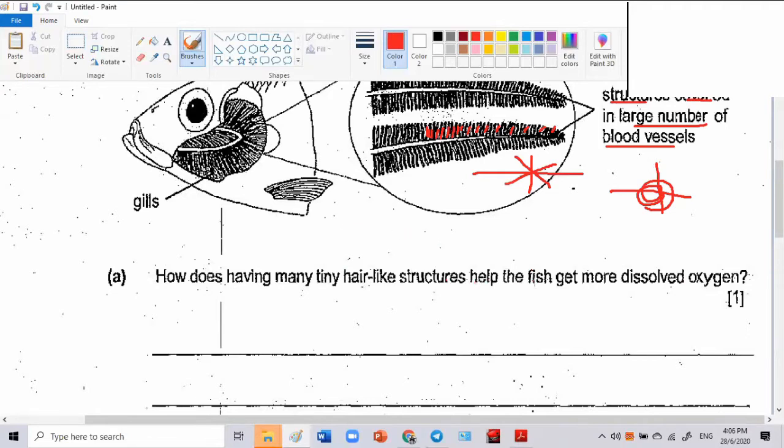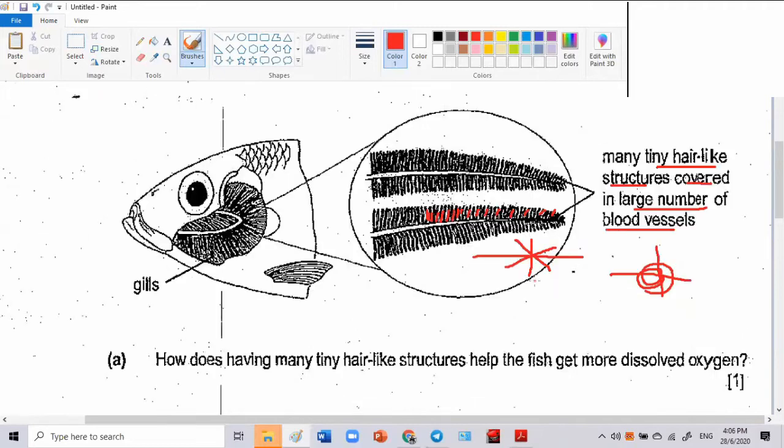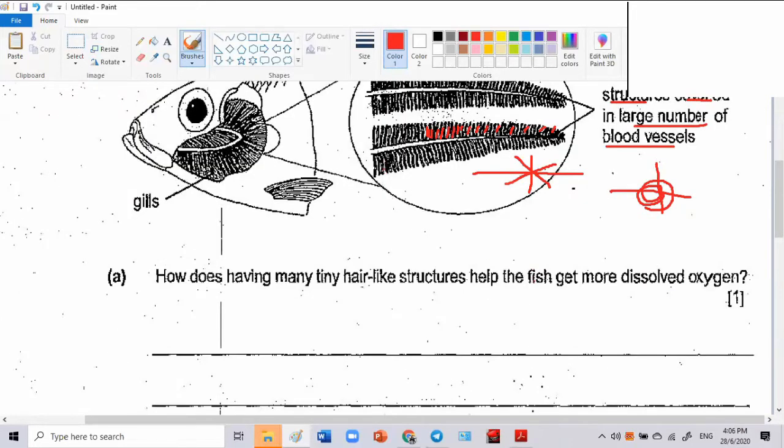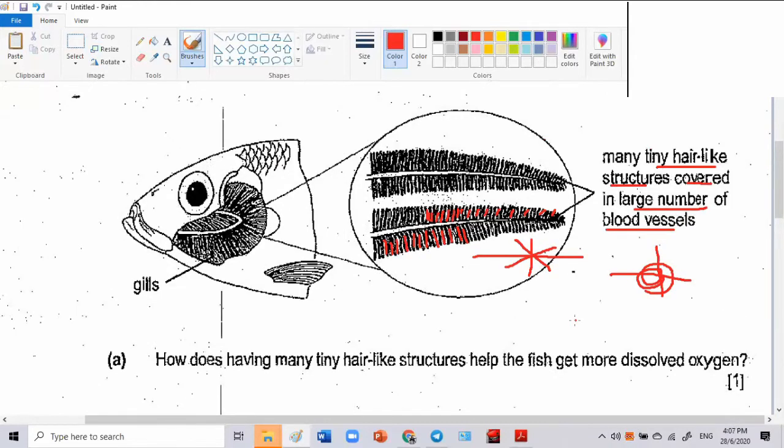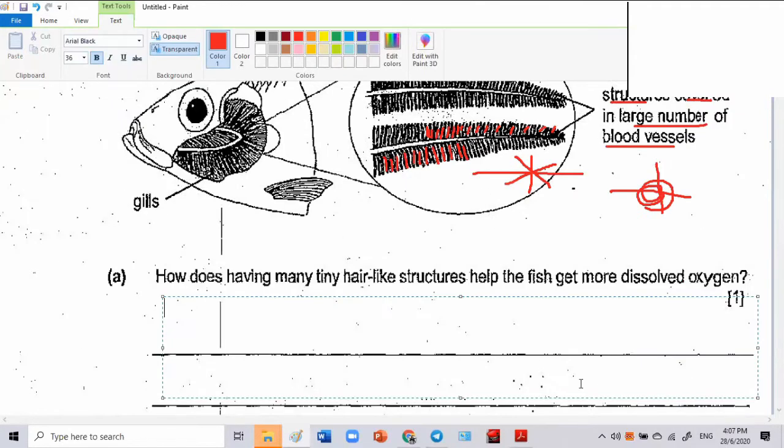How does having many hair-like structures help the fish to get more dissolved oxygen? This is related to the earlier question or not. No. Many hair-like structures. The tiny hair structure will trap the water that has oxygen and the blood that is running through will collect the oxygen in there. But I don't hear the exposed surface area.